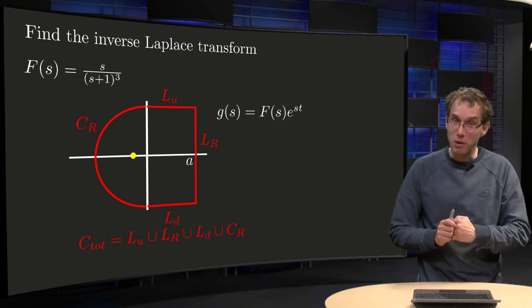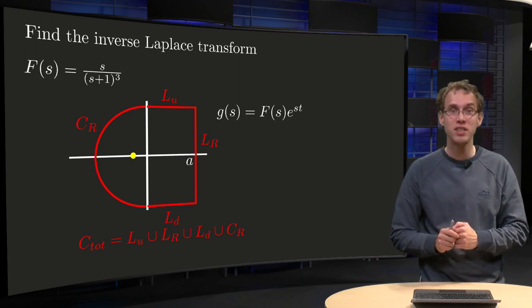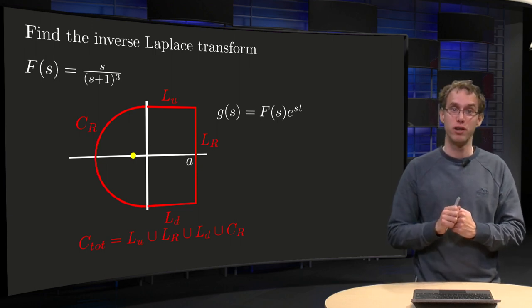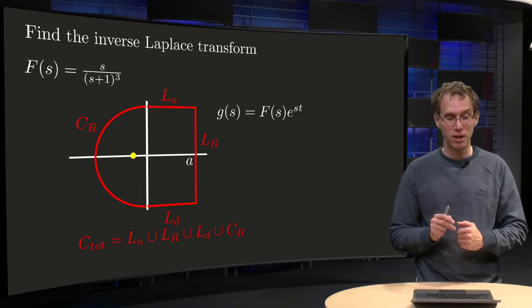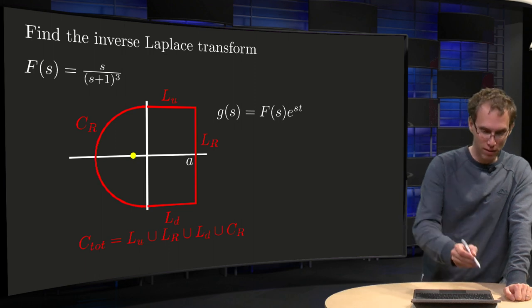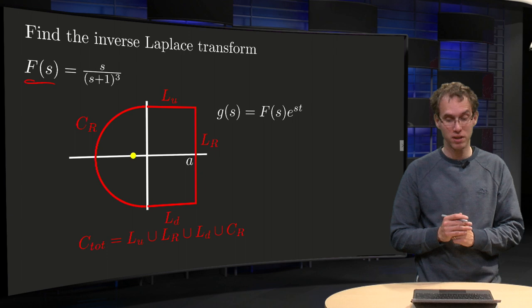We now know how to choose our contour to determine the inverse Laplace transform of a function capital F of S, including the choice of our real constant A, so let's apply this to an explicit example in this video. So let's try to find the inverse Laplace transform of capital F of S equals S divided by S plus one cubed.